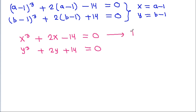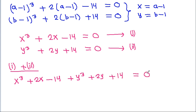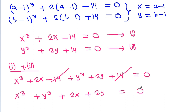Call these equation 1 and equation 2. If we add equation 1 and equation 2, we get x cubed plus 2x minus 14 plus y cubed plus 2y plus 14 equals 0. The 14s cancel, giving us x cubed plus y cubed plus 2x plus 2y equals 0.